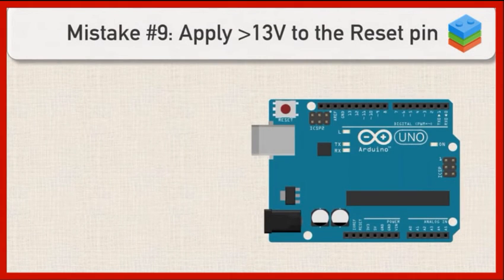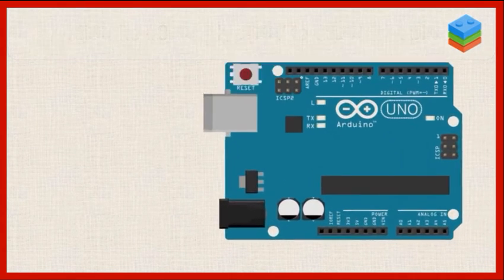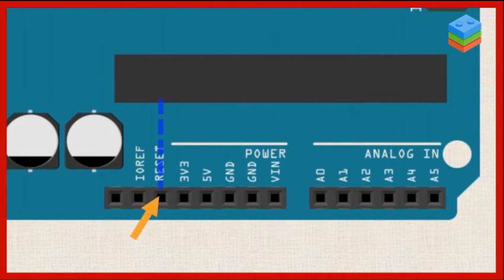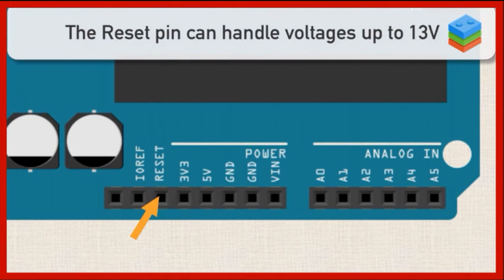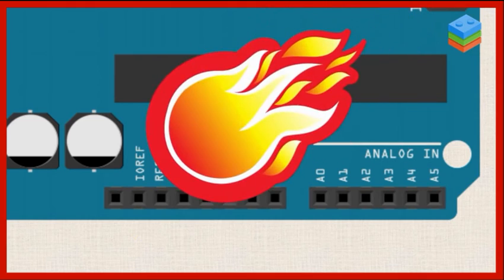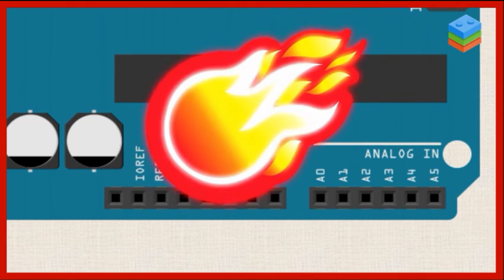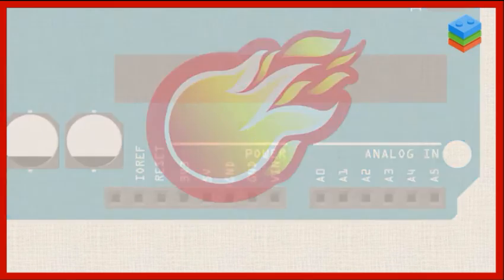One of the more robust pins on your Arduino is the reset pin. It's actually connected directly to the microcontroller that the Arduino uses. But like we've said, and especially in the last episode, everything has limits. The Arduino is no different, and the reset pin is no different. It can handle voltages up to 13 volts, which is pretty cool. But if you go over that, you're going to damage that microcontroller. So you'll want to avoid applying more than 13 volts to that reset pin.